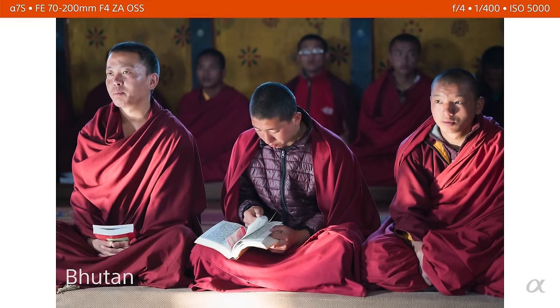These monks in Bhutan were praying in a dark temple and there was some light coming through the window and it was bouncing off this bright colored floor back onto the faces. Again, I was at 5,000 ISO and I was able to make a picture in a situation that I wouldn't have been able to do 15 years ago, maybe even 10 years ago.